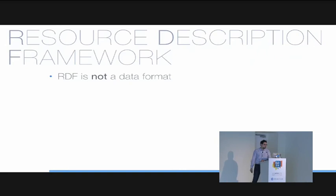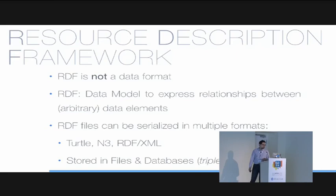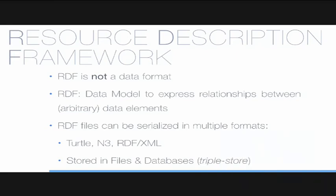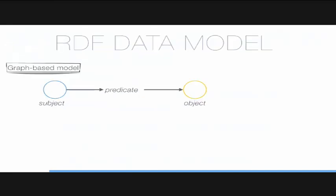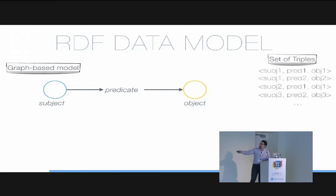RDF stands for Resource Description Framework. Actually it is not a data format — RDF is a data model to express relationships between arbitrary data elements. RDF files can be serialized in multiple formats: Turtle, N3, or RDF/XML. These serialized versions can be stored in files or databases, also known as triple stores. The RDF data model is basically a graph-based model. We have a set of triples where we have a subject, predicate, and an object, and we end up with all the data represented as a set of different triples.